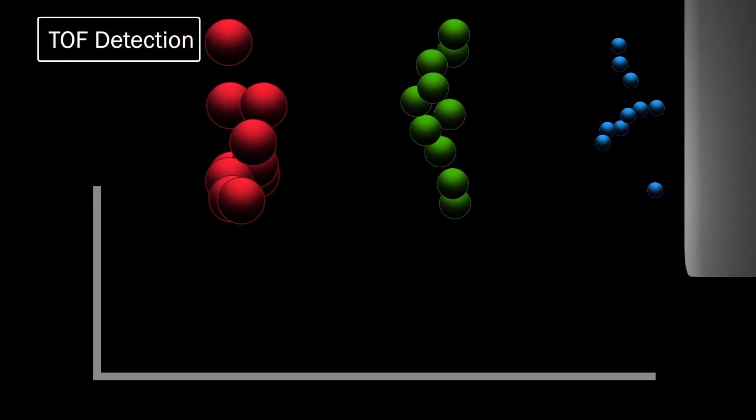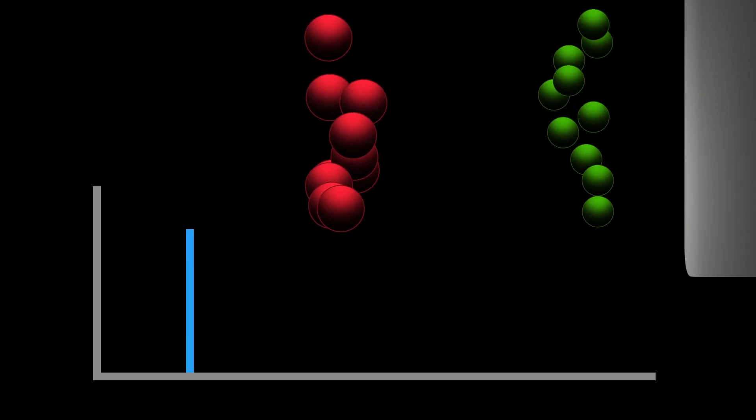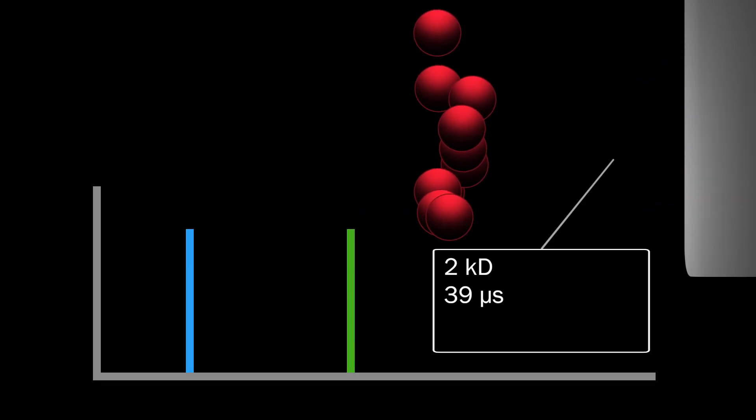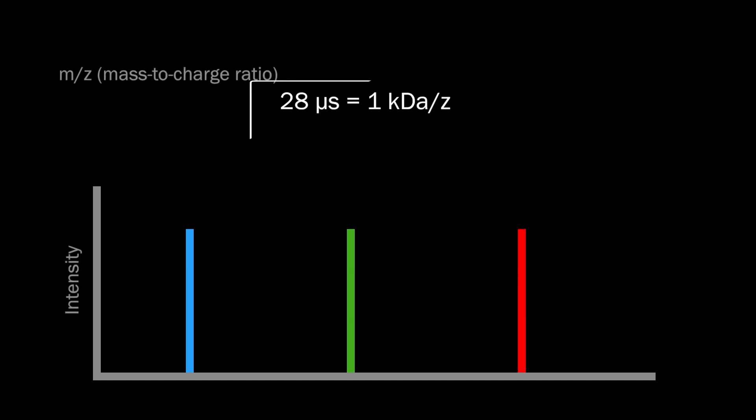The TOF detector then records the time it takes for the groups of ions to travel a certain distance. From our previous examples, for a standard 1.5-meter flight, the smallest ion would reach the detector in around 28 microseconds, the next at around 39 microseconds, and the largest ion in around 56 microseconds. From these times, and the known constant kinetic energy of the electric field, the spectrometer is able to calculate and record the mass-to-charge ratio of each ion it detects.